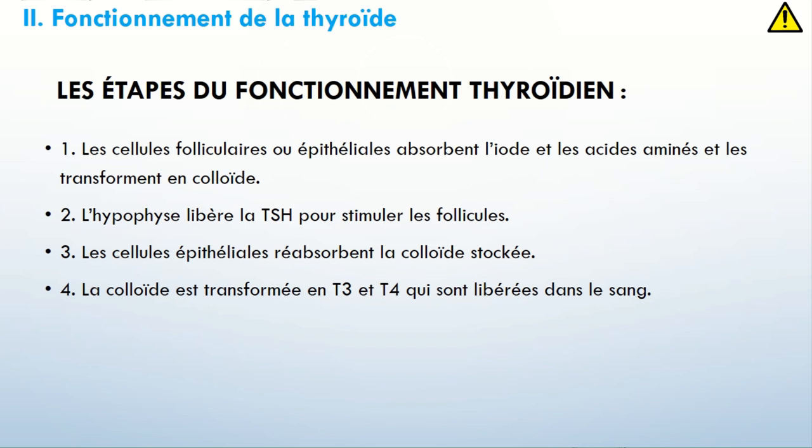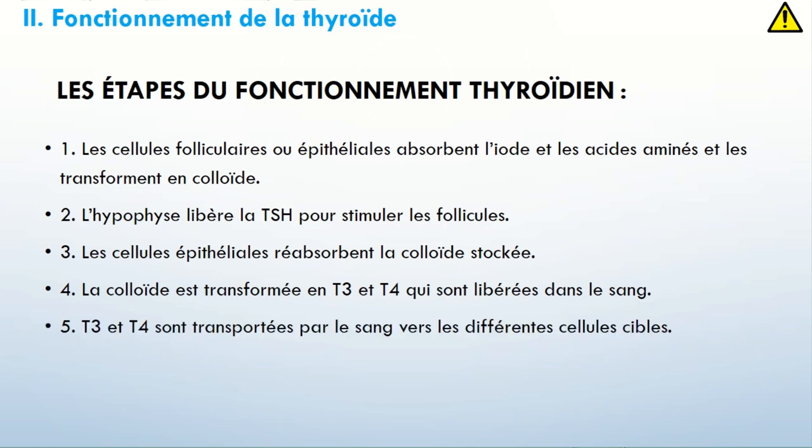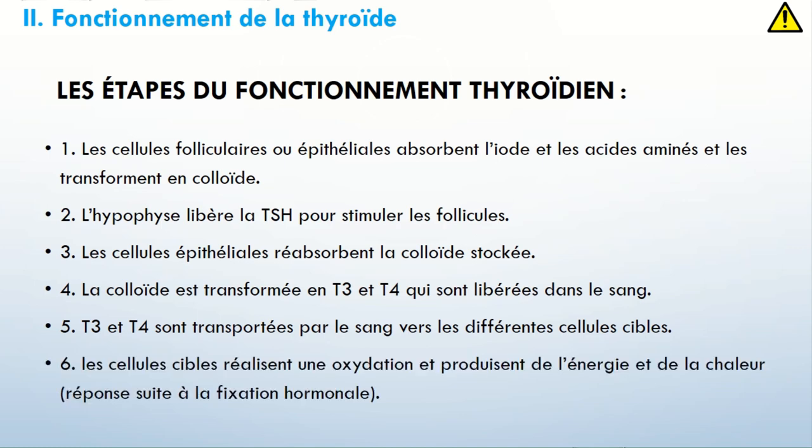Elle va les libérer dans le milieu extracellulaire, à l'extérieur de ces follicules. Ce milieu est en contact direct avec le sang, donc ces hormones vont directement passer dans le sang. 5 : T3 et T4 sont transportées par le sang vers les différentes cellules cibles. 6 : les cellules cibles réalisent une oxydation et produisent de l'énergie et de la chaleur.